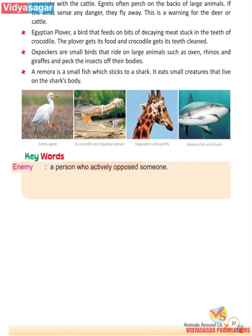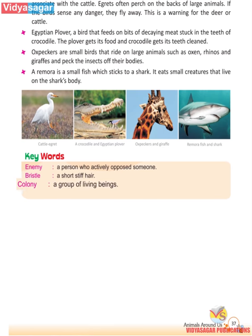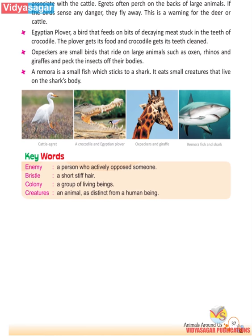Keywords: Enemy — a person or being who actively opposes someone. Bristle — a short stiff hair. Colony — a group of living beings. Creature — an animal as distinct from a human being.